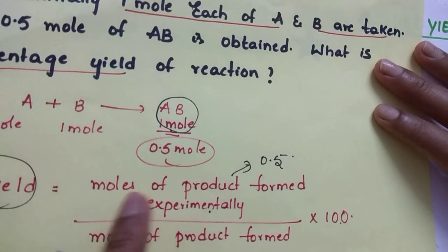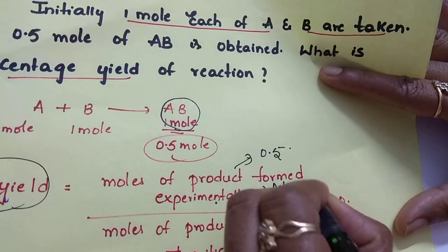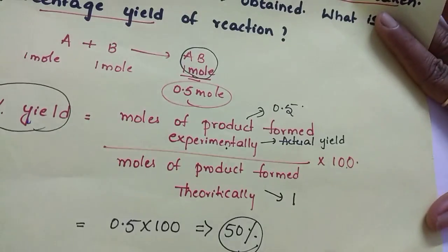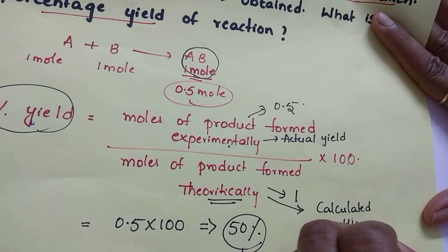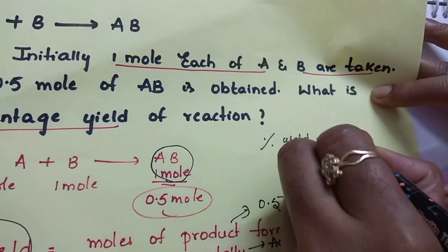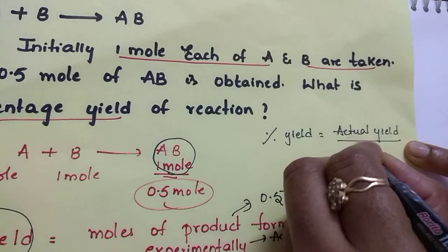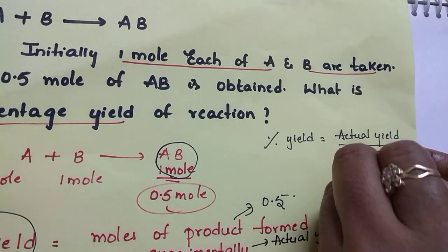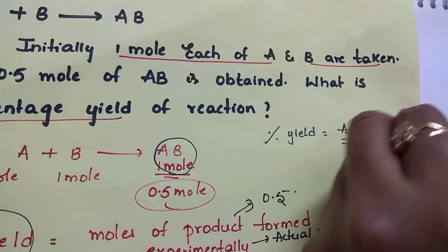One more point: moles of product formed experimentally is also called actual yield — because this is what we are actually getting. And moles of product formed theoretically is called theoretical yield, also known as calculated yield. So the formula is: percent yield equals actual yield divided by calculated yield (theoretical yield), multiplied by 100.